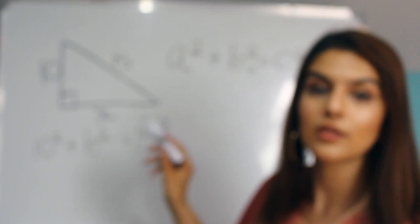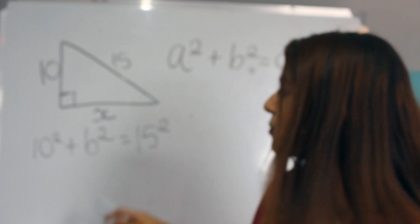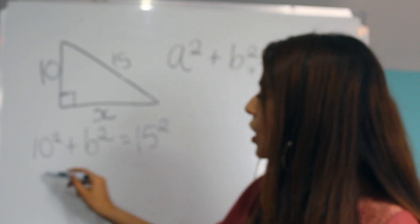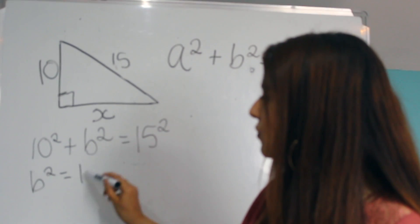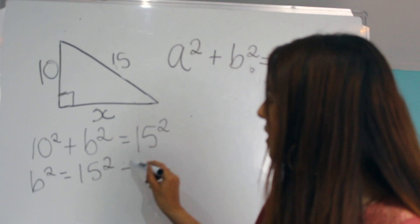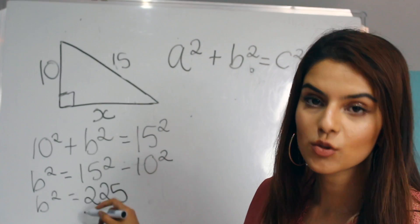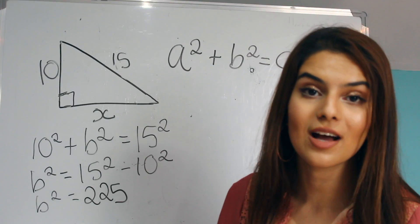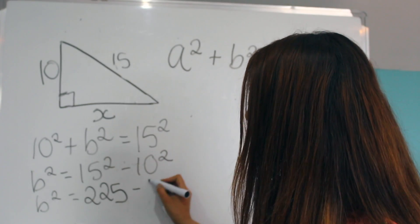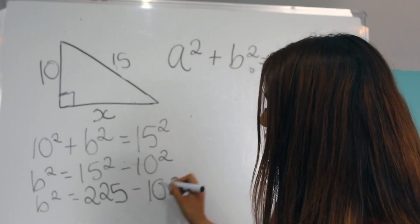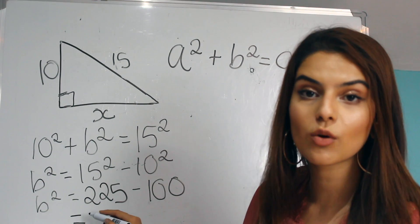Now we just simply rearrange the formula to put B as the subject, which we would get B squared equals 15 squared minus 10 squared. So 15 squared is 225. 10 squared is 100. So it's 225 minus 100, which would just equal 125.